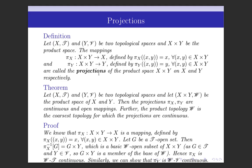Now we shall prove a theorem which tells us some important properties of these projections. Let (X, T) and (Y, V) be two topological spaces and let (X cross Y, W) be the product space of X and Y. Then the projections π_x and π_y are continuous and open mappings. Further, the product topology W is the coarsest topology for which the projections are continuous.